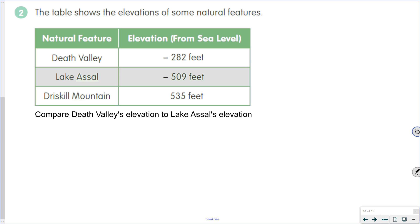For number 2, we have elevations of some natural features. We want to compare Death Valley's elevation to Lake Assal's elevation. Death Valley has an elevation of negative 282 feet. Lake Assal has an elevation of negative 509 feet. So Death Valley's elevation is greater than Lake Assal's elevation.